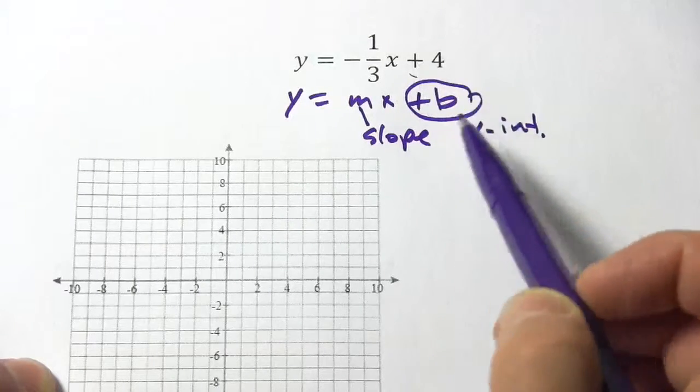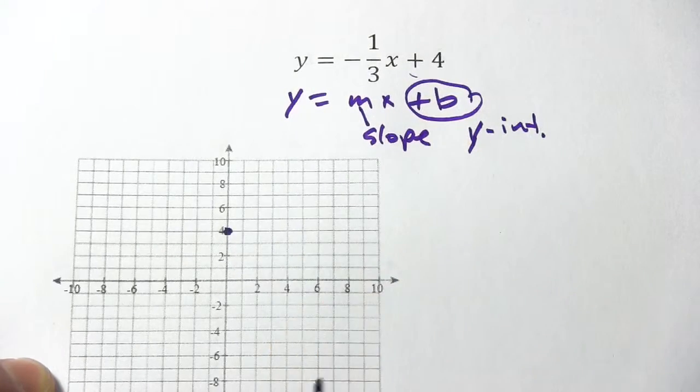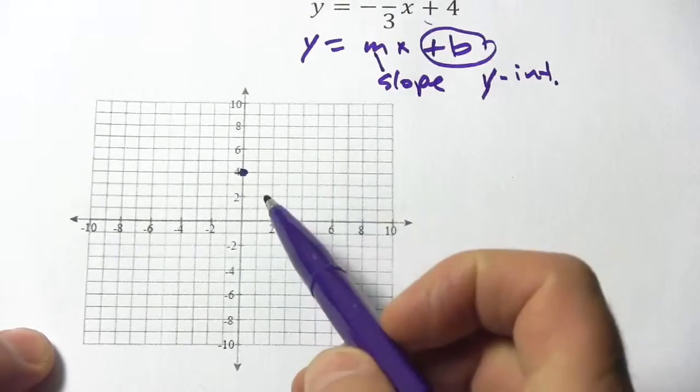Let's start with the y-intercept. We have a plus four for our y-intercept, so that's this point right here where you have four on the y-axis.